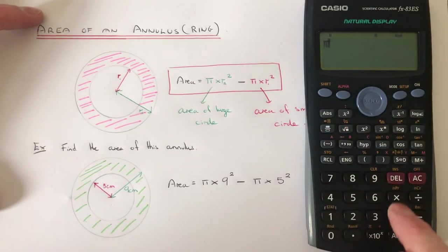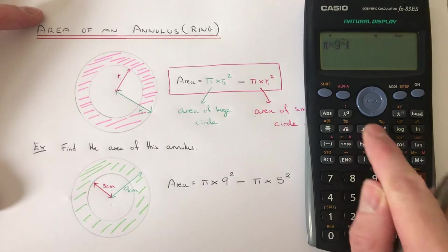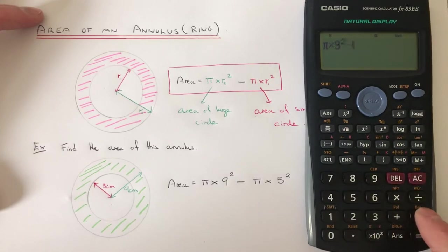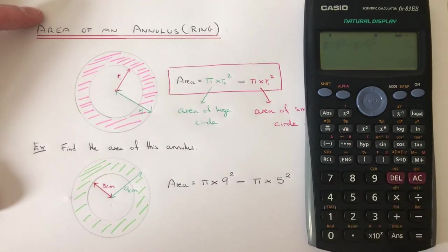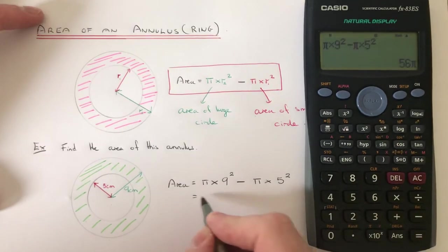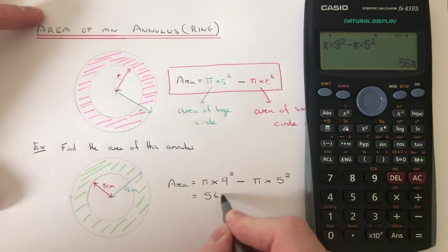So shift pi times 9 squared, minus shift pi times 5 squared. So you can see there's the exact answer: 56 pi.